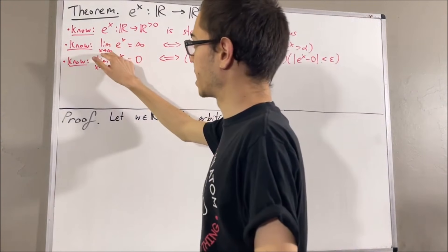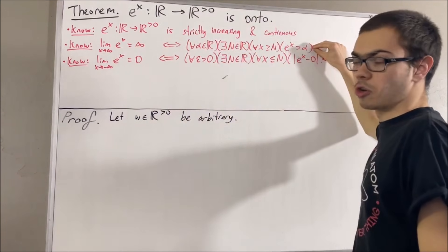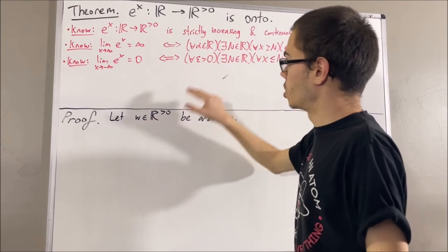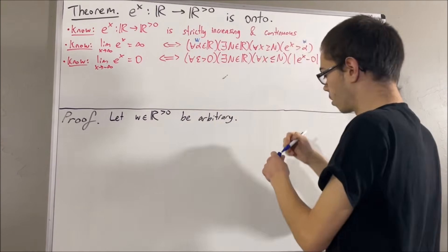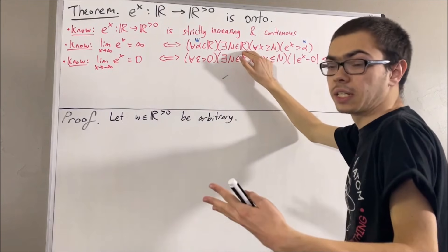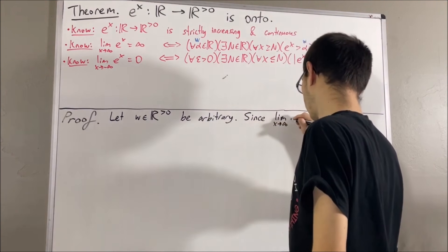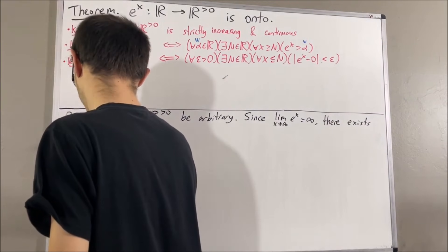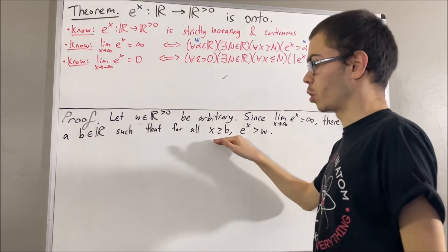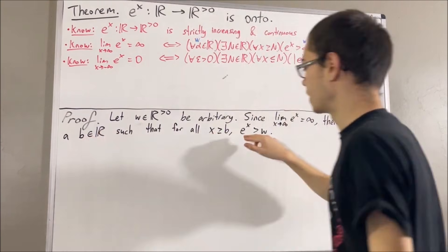Since we know the limit as x approaches infinity of e^x equals infinity, this statement is true for every real number. In particular, it must work for the real number w. So, taking α to be w, there exists a real number I'll call b, such that for all x ≥ b, e^x > w. This statement works for every real number greater than or equal to b, so in particular it works for b. Taking x to be b, we have that e^b > w.